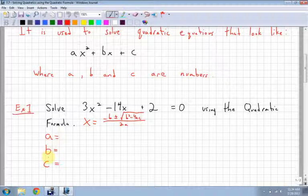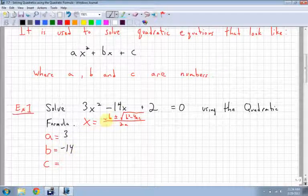Notice it says solve. It's got to be equal to 0, and we're gonna use the quadratic formula. First things I need are my values for a, b, and c. My value for a is 3. My value for b is the value in front of x, which is negative 14. Very important about signs here, because notice I have a negative b.